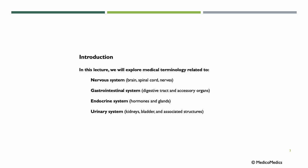In this lecture, we will explore medical terminology related to the nervous system, which covers our brain, spinal cord and nerves; the gastrointestinal system, so our digestive tract and its accessory organs; the endocrine system, hormones and glands; and the urinary system, covering the kidney, bladder and associated structures.